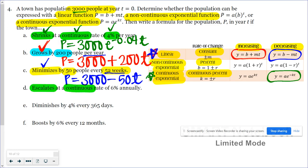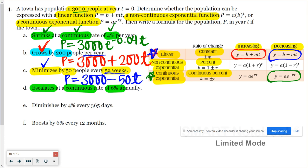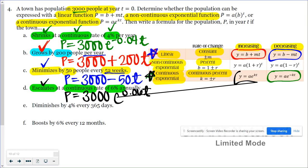On to the next. Escalates at a continuous rate of 6% annually. You caught that rather quickly this time. Continuous. So we're looking at a continuous exponential function. Escalates indicates it's increasing, so it's going to look like y equals a times e to the kt power. We're using P for population. The initial population is 3,000. We're using e because of that continuous rate. It's escalating, so our exponent is positive, and it's going to be positive 0.06 times t. Excellent.